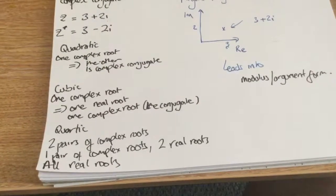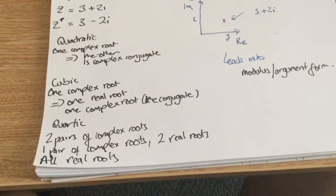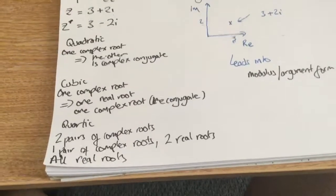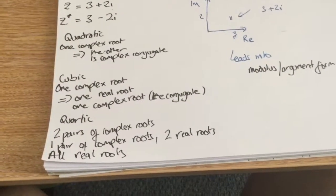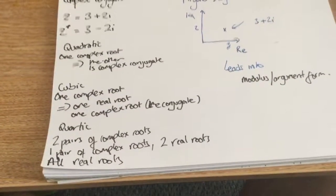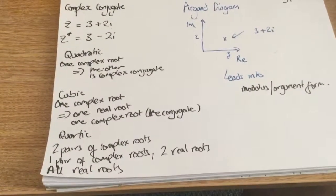Quartics are a little bit more complicated. Obviously there's three different things that could happen. You could have two pairs of complex roots, you could have a pair of complex roots and two real roots, or you could have all real roots. You couldn't have three complex roots for the reasons I've given you before: if you've got a complex number, its complex conjugate will also be a solution.